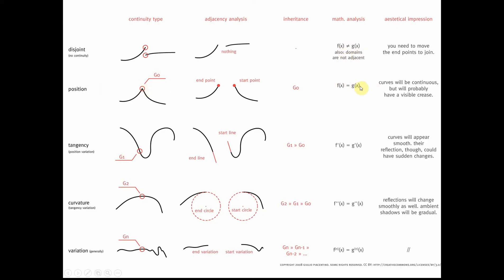they are not equal to each other on the Y value. For position continuity, F of X is the same as G of X. If you think of this graphically, the beginning and ending of the curves — for that particular X value — they're equal to each other; they have the same Y output. So that's G0 continuity.